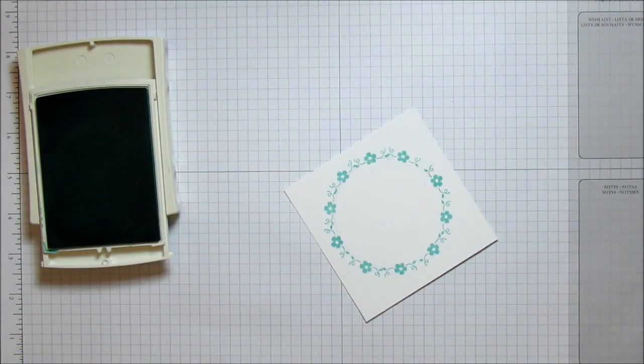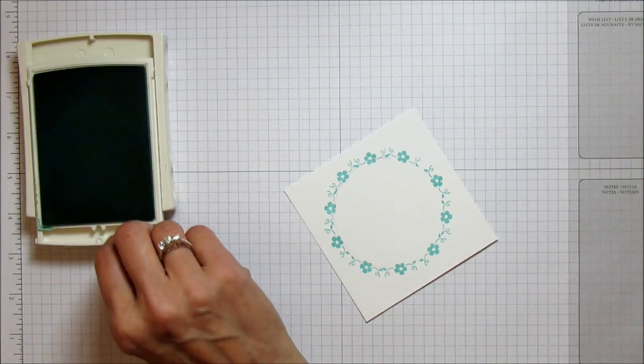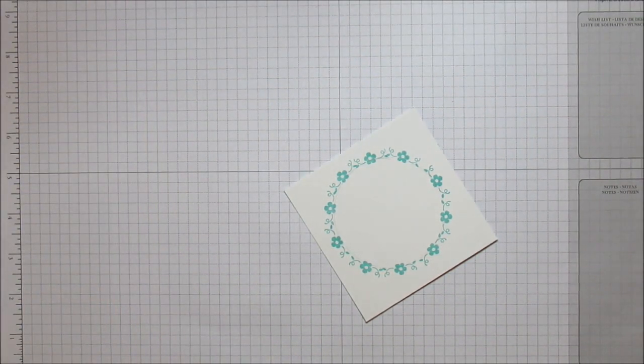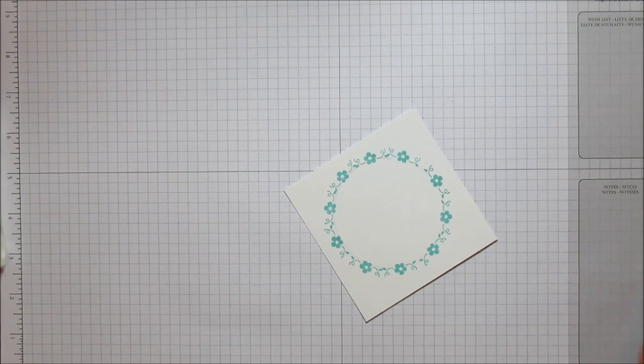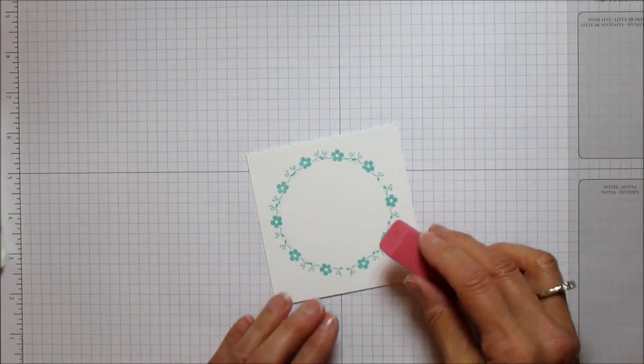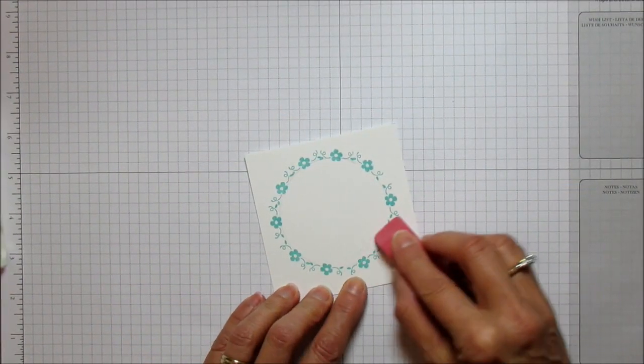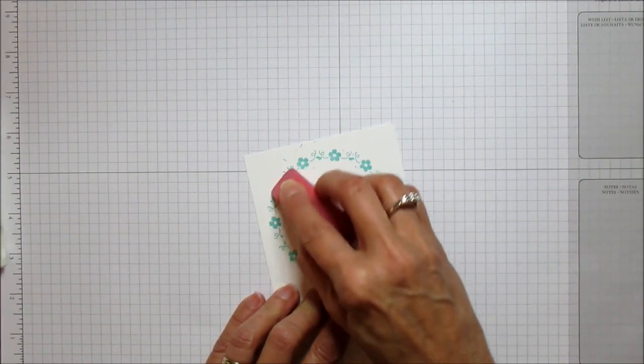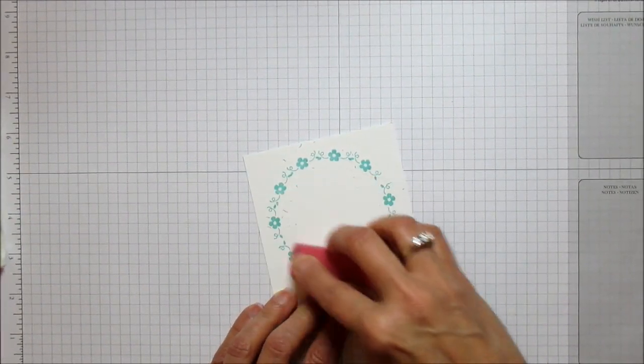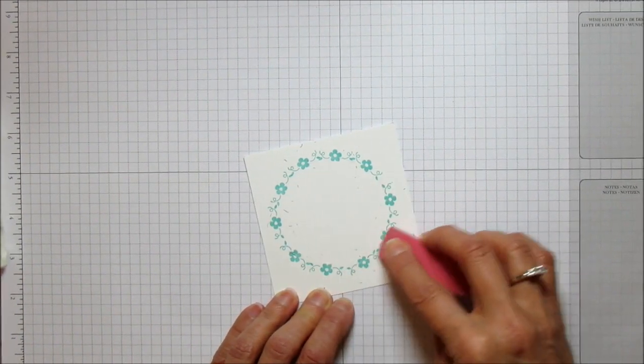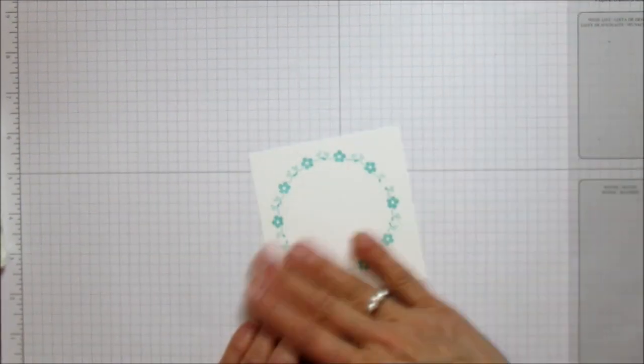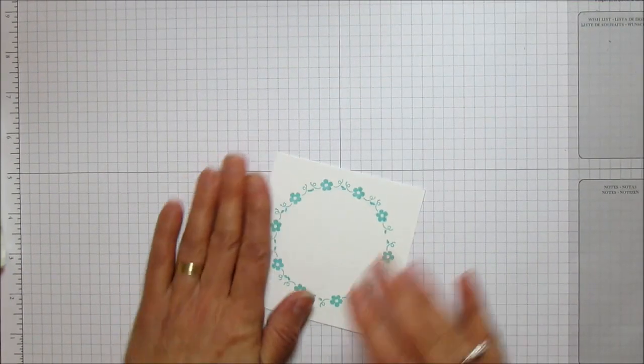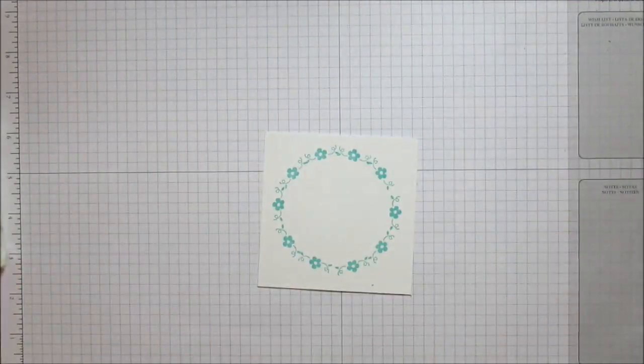So that's it, it's that easy. The next thing that I'm going to do is I'm going to go ahead and erase that pencil line. It's very light and you really can't see it, but you want to make sure you erase it, and then you're ready to stamp in the center.